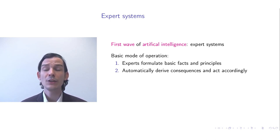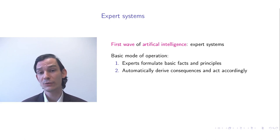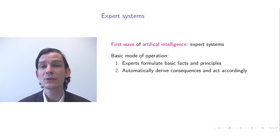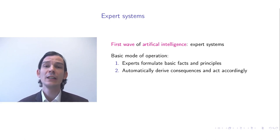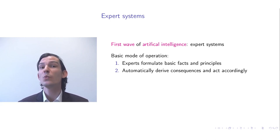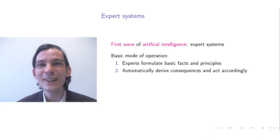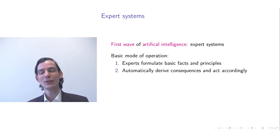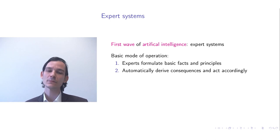To understand what an expert system is, consider the following basic mode of operation. You have a group of experts that formulate facts and principles. Then, based on those facts and principles, you automatically derive the consequences. And based on those consequences, you would take action. This is very abstract, but it gives you an idea of what you could do to have a machine think like a human.